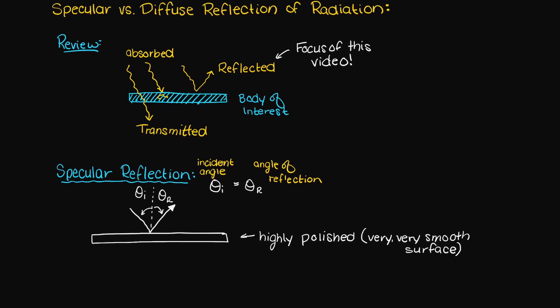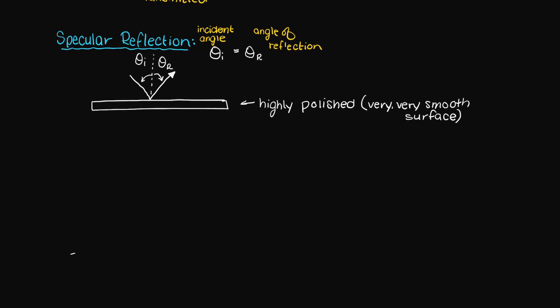Smooth is kind of a relative term here. The smaller the incoming wavelengths, the more the rough surface will have an impact on the incoming radiant energy.